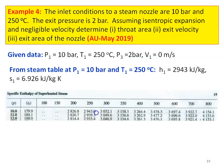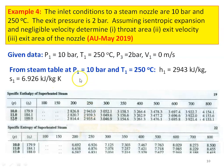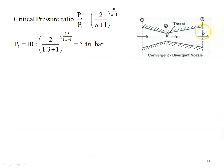For the inlet condition, we take properties from the superheated steam table. At P1 equal to 10 bar and T1 equal to 250 degree Celsius: specific enthalpy H1 equal to 2943 kilojoules per kilogram, and specific entropy S1 equal to 6.926 kilojoules per kilogram Kelvin. For the convergent-divergent nozzle, the throat pressure is calculated using the critical pressure ratio: P2 by P1 equal to (2 divided by N plus 1) to the power N divided by (N minus 1). For superheated steam, N equal to 1.3. So P2 equal to 10 into (2 divided by 2.3) to the power (1.3 divided by 0.3) equal to 5.46 bar.